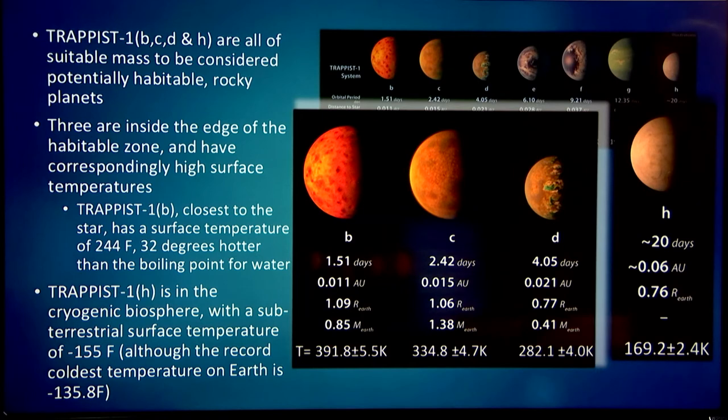But B, C, D, and H are all of suitable mass to be considered potentially habitable as well. They're all rocky planets. Three are inside the edge of the habitable zone and have correspondingly high surface temperatures. TRAPPIST-1b, closest to the star, has a surface temperature of 244 degrees Fahrenheit. That's just hotter than the boiling point of water.